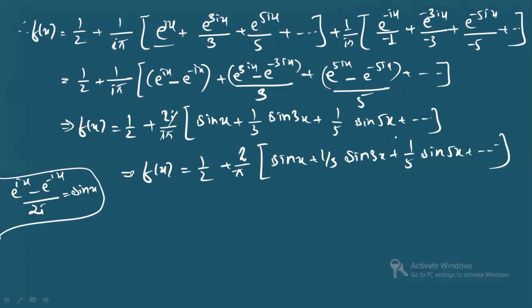This is the Fourier series expansion in complex form. In Fourier series problems, you need to remember how to calculate the coefficients: identify the period of the function, look at the intervals, and then integrate properly to get your answer. You may not get many such questions in CSIR NET, but since the paper pattern changes each year, it's better to cover all the topics. Thank you, have a good day.